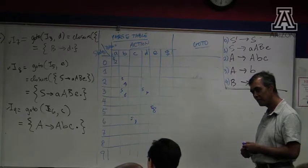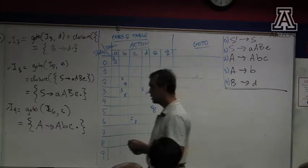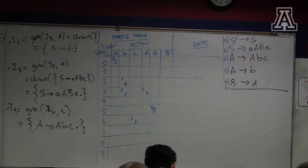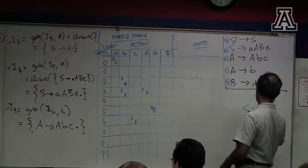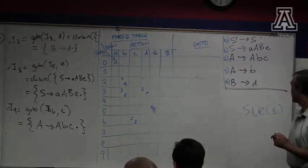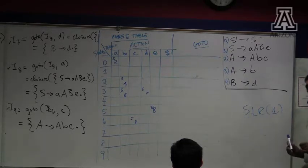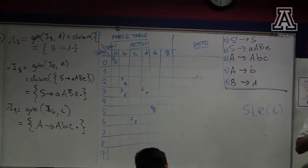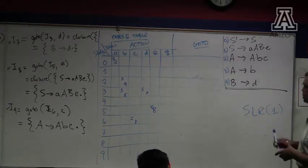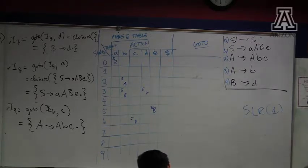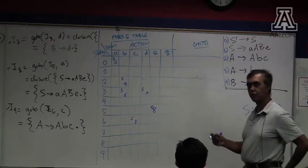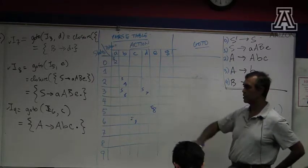Is this what Yacc is doing when it's creating y.output? It's doing something very similar — this process is constructing a table for something called SLR(1): simple LR with one token lookahead. It turns out this is not quite powerful enough to parse some grammars that intuitively seem reasonable. What Yacc uses is something a little more sophisticated, which therefore has fewer reduce/reduce conflicts. But the essential idea is very similar — it's just a refinement of this process.